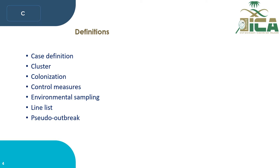Other key definitions: Case definition is defined as criteria applied — such as clinical criteria, laboratory criteria, and other diagnostic methods — to identify a particular infectious disease. In outbreak investigations, there may be limitations on time and place to reflect the unique scope of the expected event.